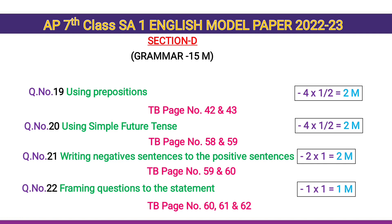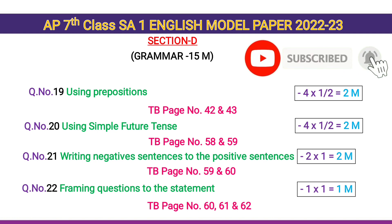Question number 21 — writing negative sentences from positive sentences — 2 questions, 2 × 1 = 2 marks. Textbook page number 59, 60. Question number 22 — framing questions to the statements. Textbook page number 60, 61, 62.